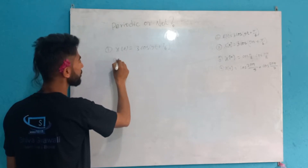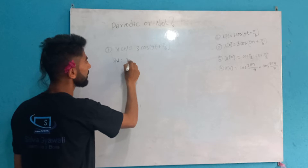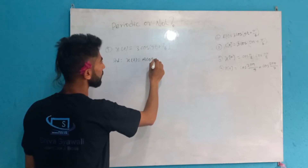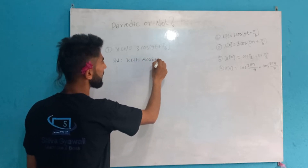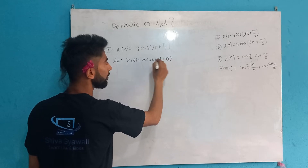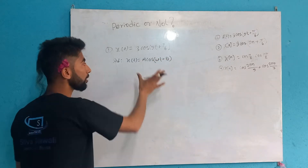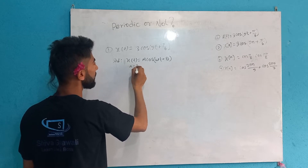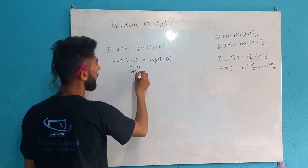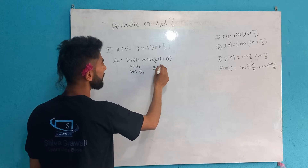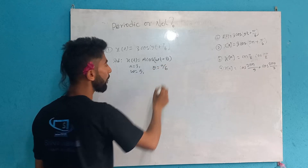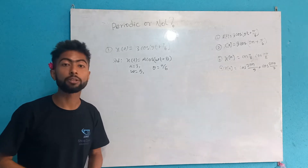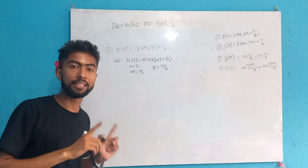Compare with the standard equation. The standard equation is x(t) = A·cos(ωt + θ). Comparing, we get A = 3, ω = 5, θ = 5π/6. Now let's determine if it is periodic or non-periodic. Continuous-time sinusoids like cosine are periodic by nature.